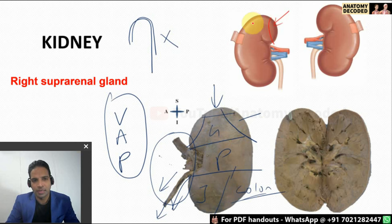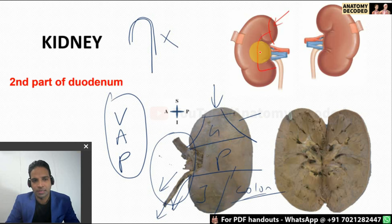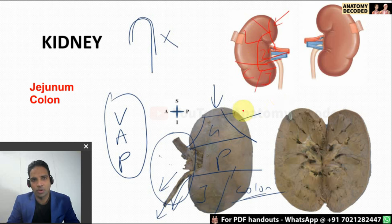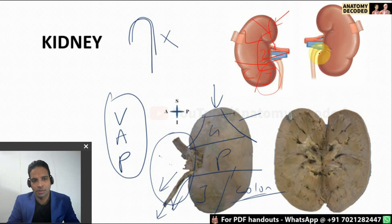For the anterior relations of the right kidney: there is the right suprarenal gland, and the C-shaped second part of the duodenum. A large area is covered by the liver. On the medial aspect there is jejunum, and the colon is on the lateral aspect. Jejunum is labeled on the medial aspect and colon on the lateral aspect on both sides.